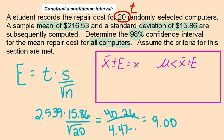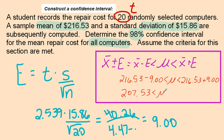So we're going to be saying that the population mean is between x-bar plus the error for the upper bound, and x-bar minus that error for my lower bound. x-bar is $216.53, plus the margin of error of 9.00. So my values are for a lower bound of $207.53 and an upper bound of $225.53.